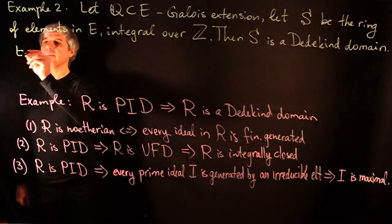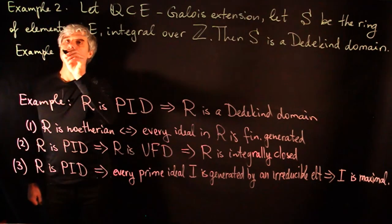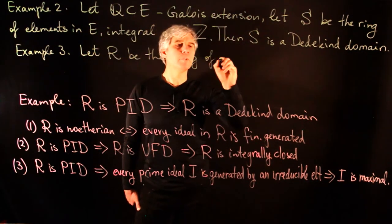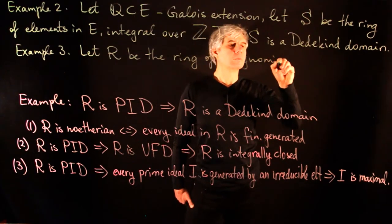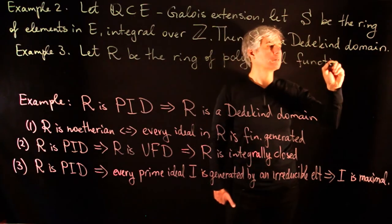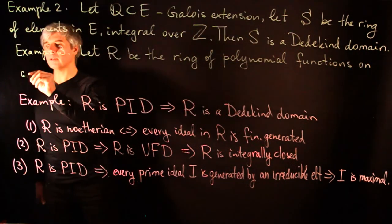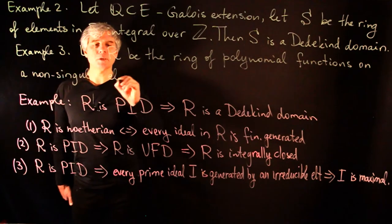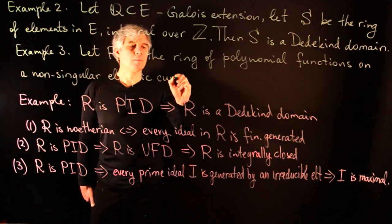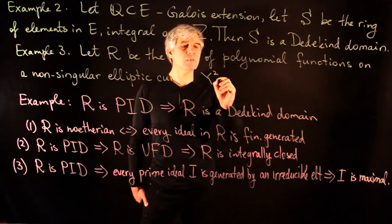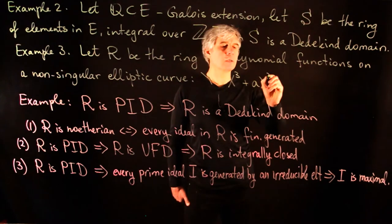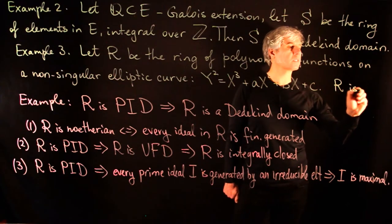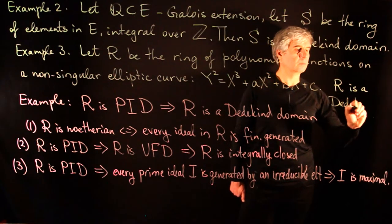Our third example is of geometric nature. Let R be the ring of polynomial functions on a non-singular elliptic curve given by the equation y² = x³ + ax² + bx + c. Then this ring R is a Dedekind domain.